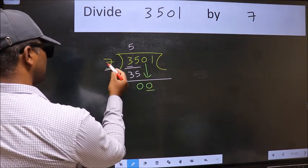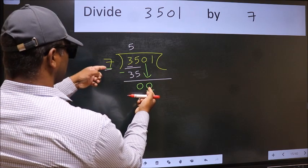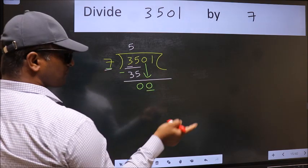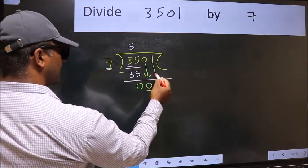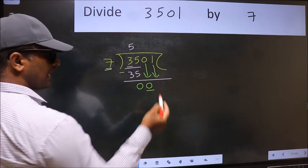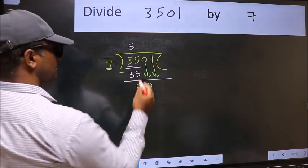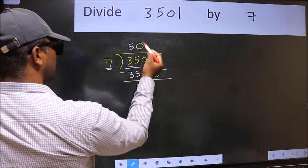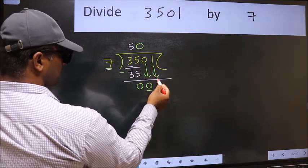Now here we have 0 and here 7. 0 is smaller than 7. So we should bring down the second number. And the rule to bring down the second number is we should put 0 here. Then only we can bring this number down.